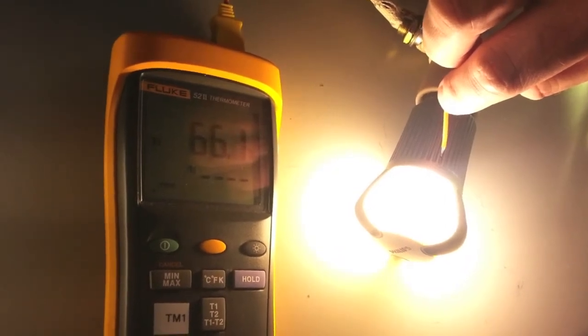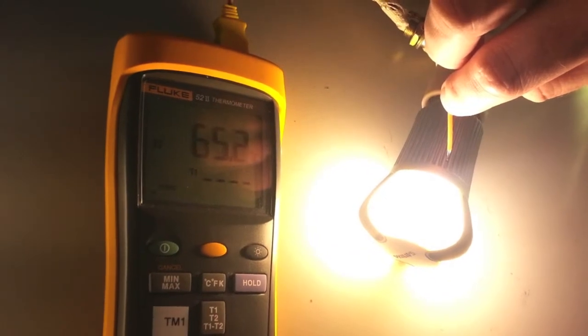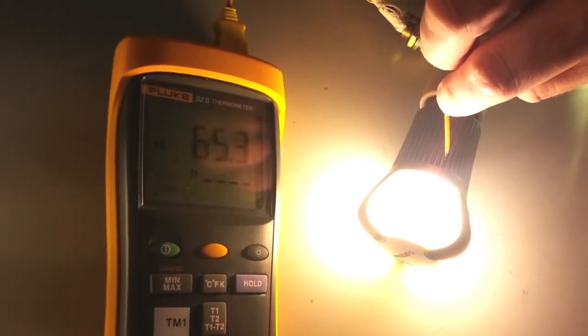Temperature of an LED light bulb off the shelf that's been running for over eight hours, you get a temperature of 65 degrees Celsius.